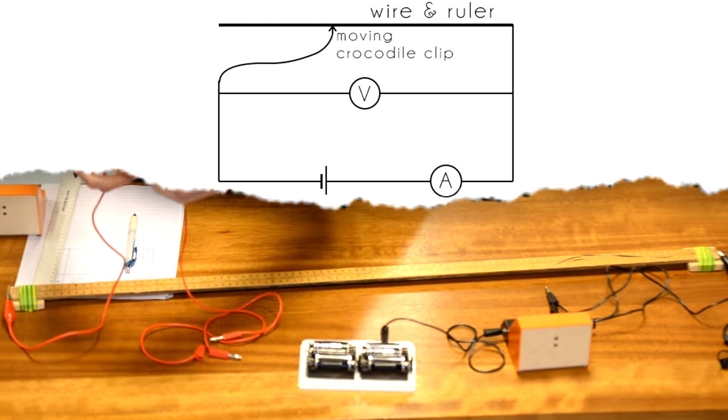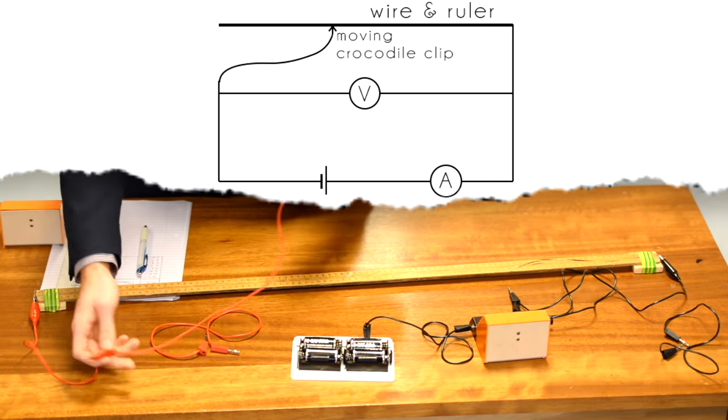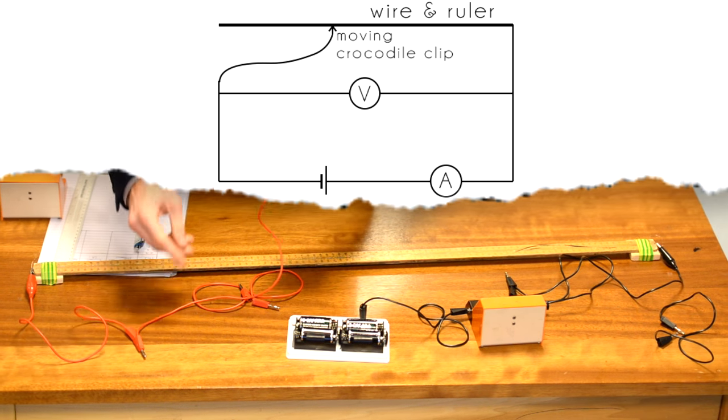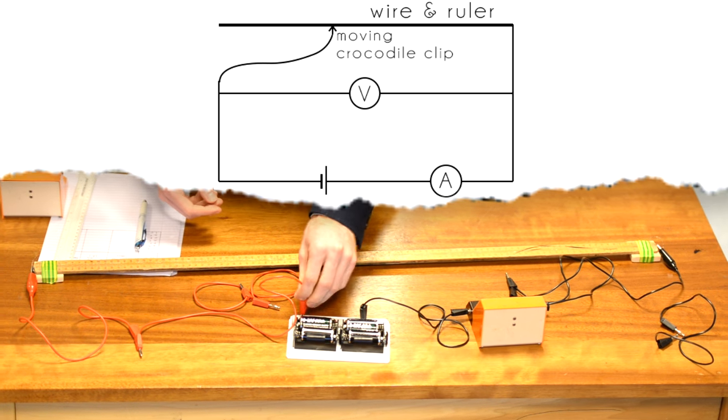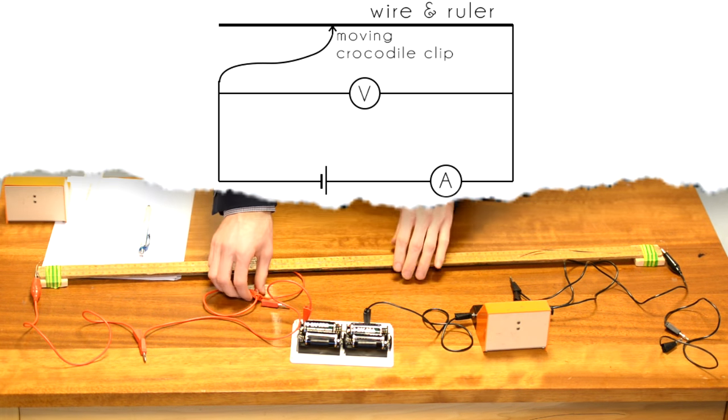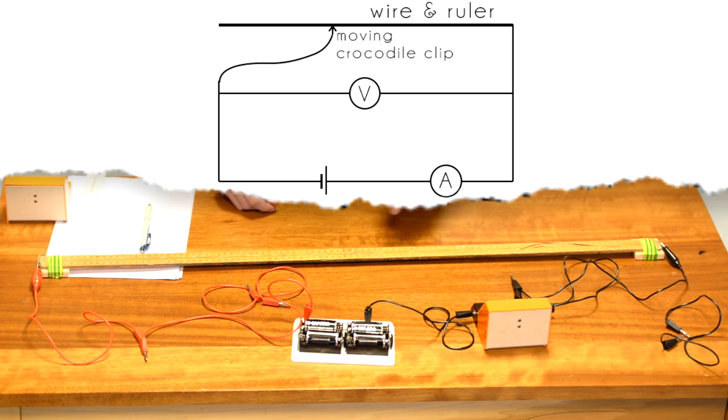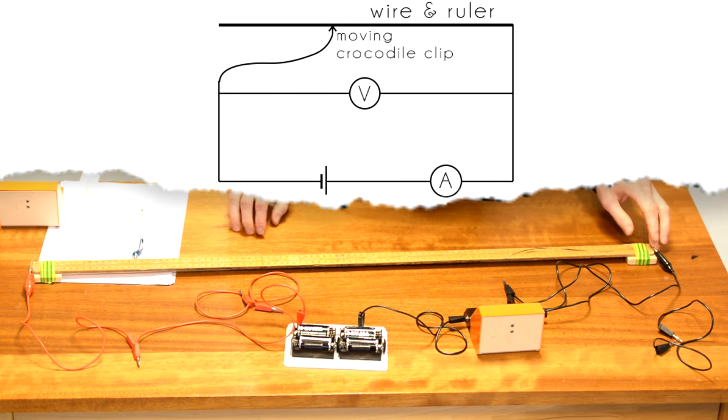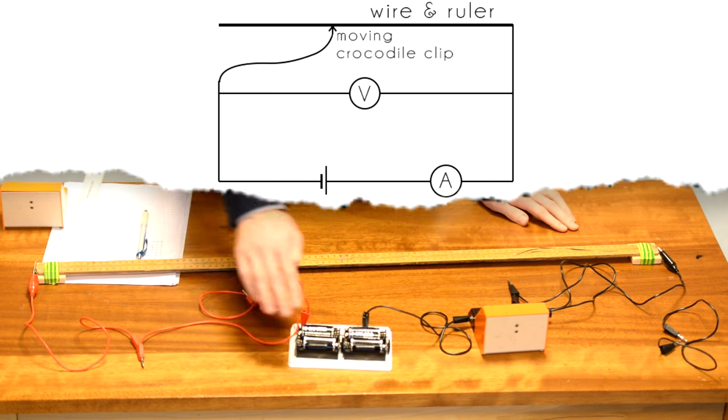Now I'm going to then just finish off by connecting that up to the other terminal of the battery, again using a double length cable so that I've got plenty of leeway. I've now got a series loop from the battery to the ammeter through the resistance wire and back to the battery.